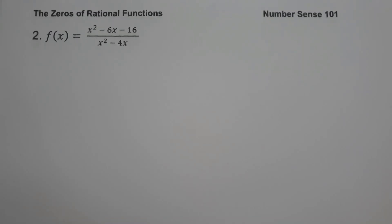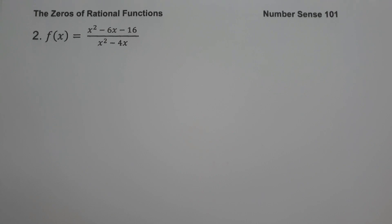On example number 2, we have f of x equals x squared minus 6x minus 16 all over x squared minus 4x. To find the zeros of the given function, the first step is to factor the numerator and the denominator.